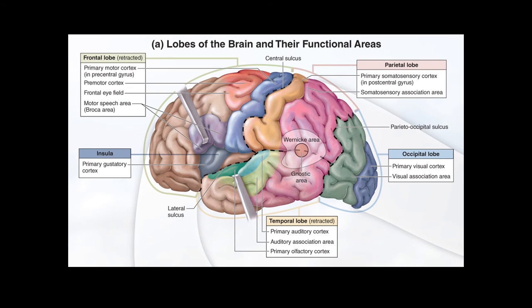Right behind the frontal lobe is the central sulcus — a deep groove that divides the frontal and parietal lobes. In front of the sulcus is the primary motor cortex, which lies within the precentral gyrus — that purplish-blue area. Behind the groove is the somatosensory cortex — soma meaning body — found within the postcentral gyrus, that orangish-cream area behind the central sulcus.